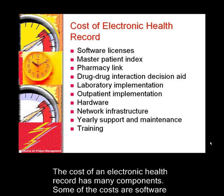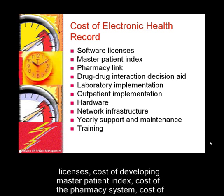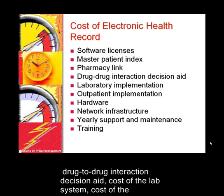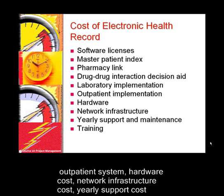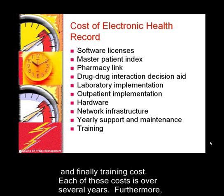The cost of an electronic health record has many components. Some of the costs are software licenses, cost of developing a master patient index, cost of the pharmacy system, cost of drug-to-drug interaction decision aid, cost of the lab system, cost of the outpatient system, hardware cost, network infrastructure cost, yearly support cost, and training cost.